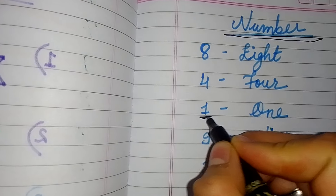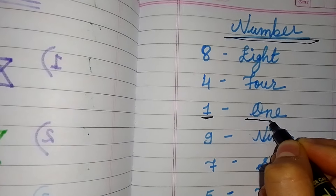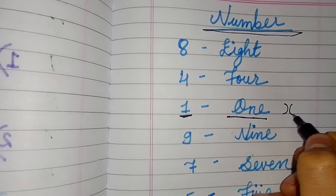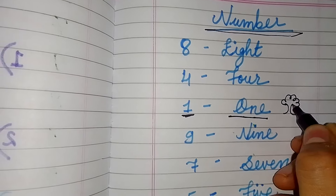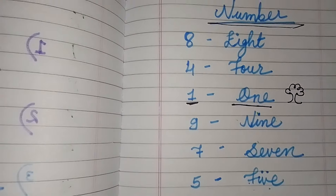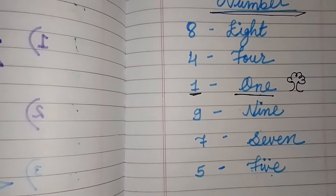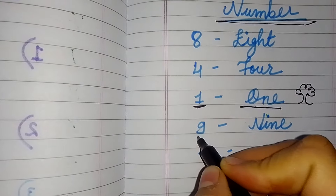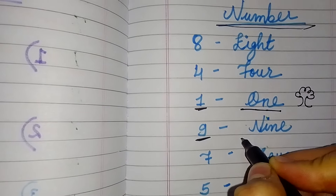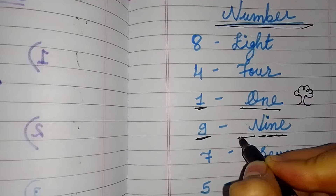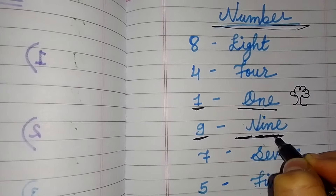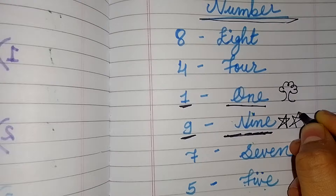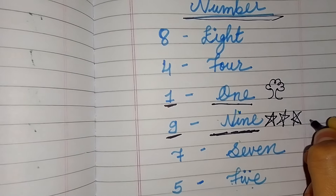What is the spelling of one? O-N-E — one. Now, it is number nine. Here is number nine. The spelling is N-I-N-E — nine. So we'll be making nine stars: one, two, three, four, five, six, seven, eight, and nine.